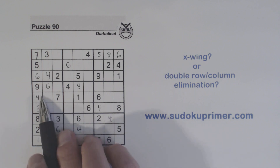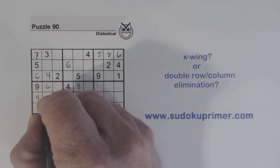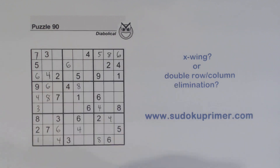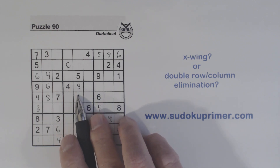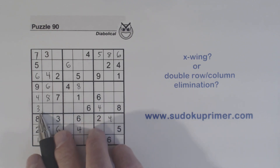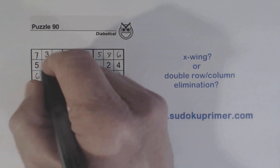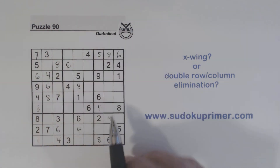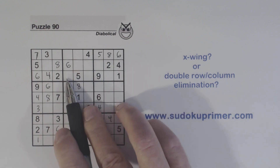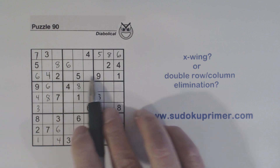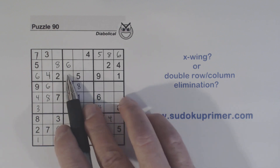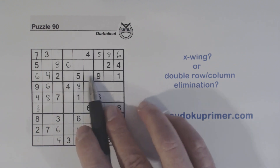Now with this 8 here, we can fill in some more 8's. There's an 8 there. And we have an 8 here. So now we have 8, 8, 8, 8, 8, 8, 8, 8, 8. The only ones we have left now are the four 8 candidates we found earlier.